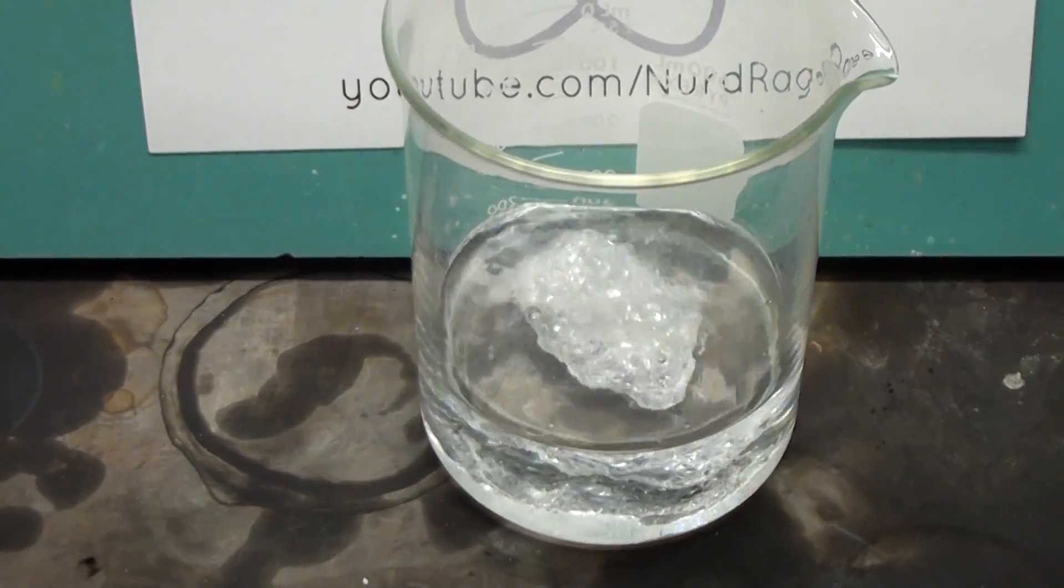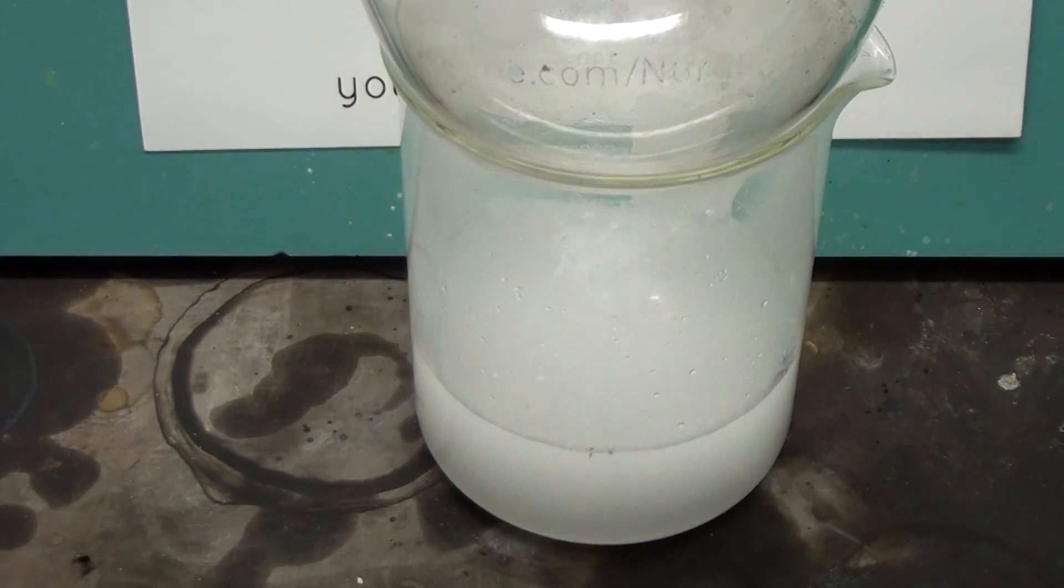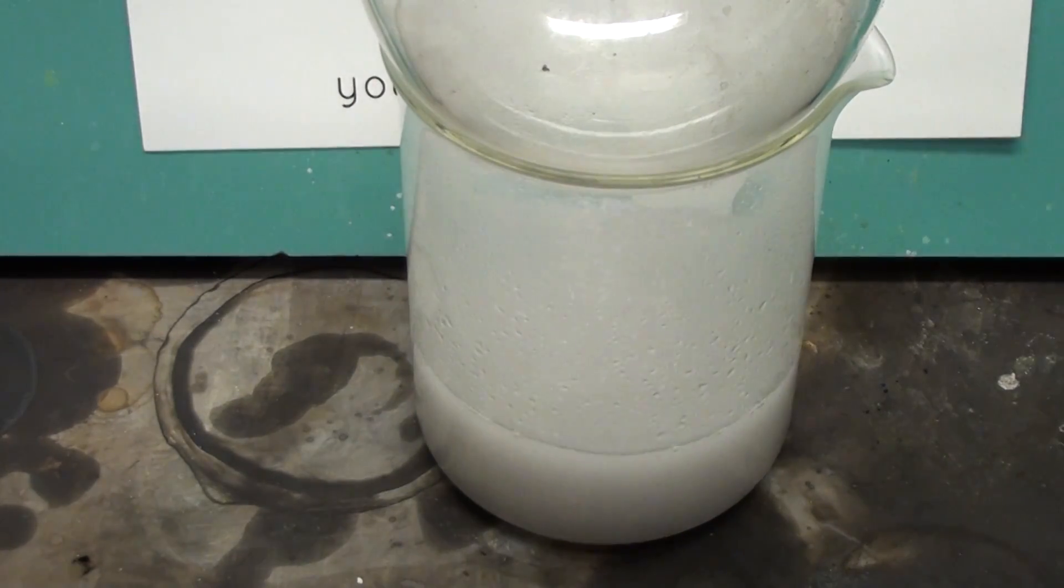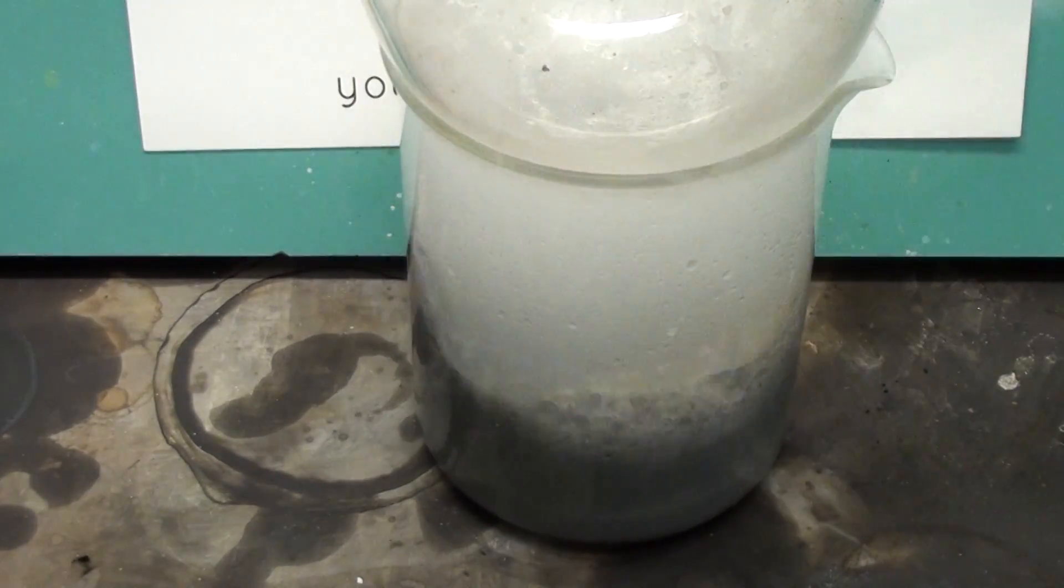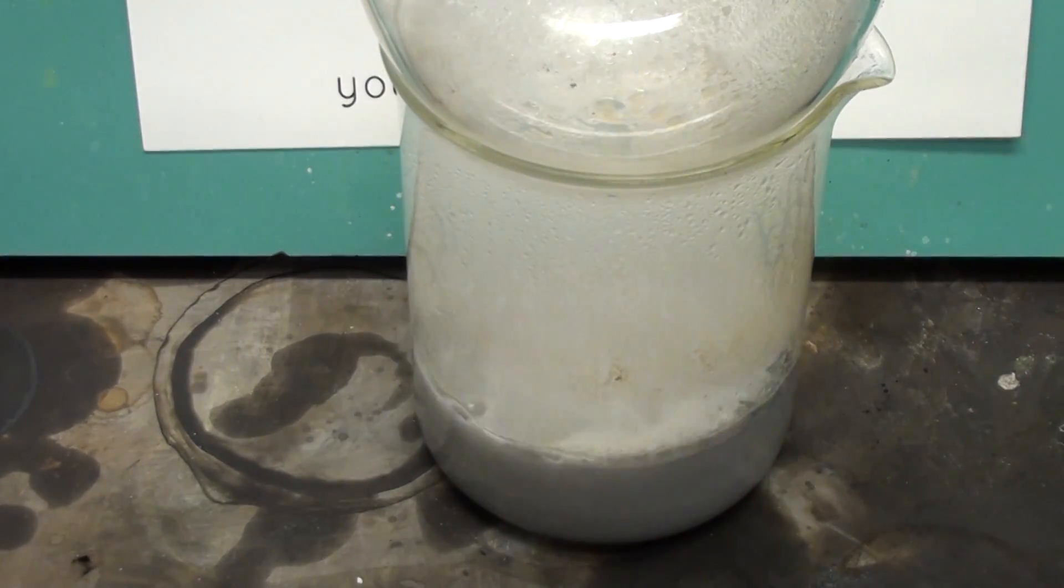Here is the concentrated hydrochloric acid. I'm putting this round bottom flask over it to keep it from splashing out. The acid is reacting with the aluminum foil to form hydrogen gas and aluminum trichloride. Since it's highly concentrated, the aluminum trichloride hydrate is precipitating out as a powder.